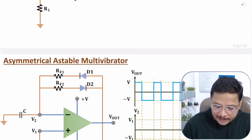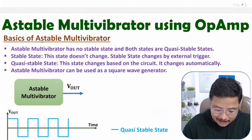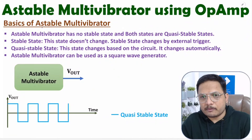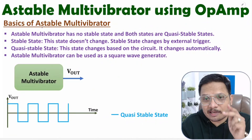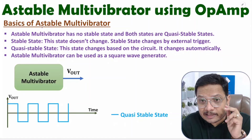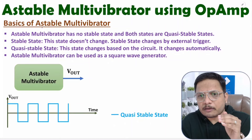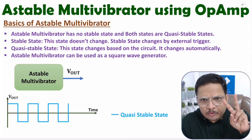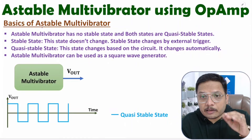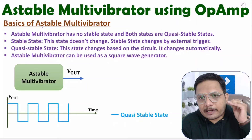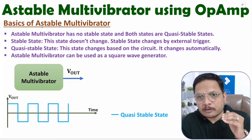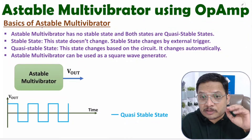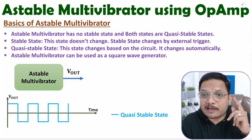Let us start with the first agenda: basics of the astable multivibrator. First of all, one should understand what an astable multivibrator is. Astable multivibrator means both states are not stable. There are two states: plus V voltage and minus V voltage. So both states are not stable — both states are in a quasi-stable state.